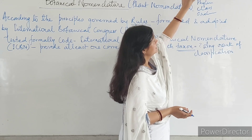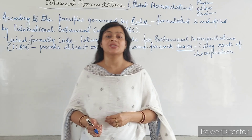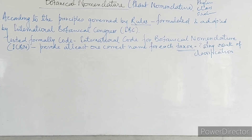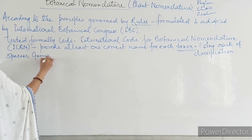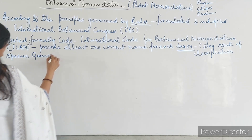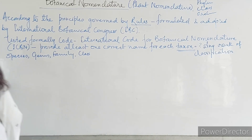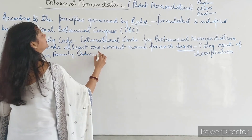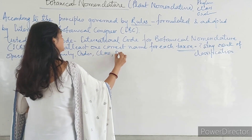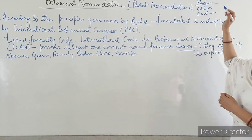Phylum is a taxon, class is a taxon — each rank of classification is known as a taxon. The ascending hierarchy of taxa includes species, genus, family, order, class, and then division. In the case of animals, division is replaced by phylum.